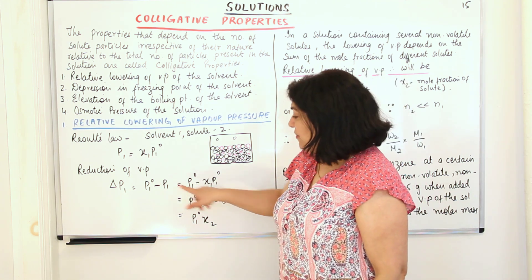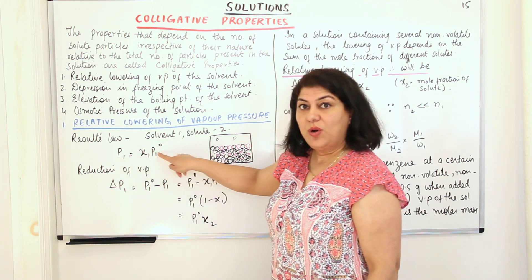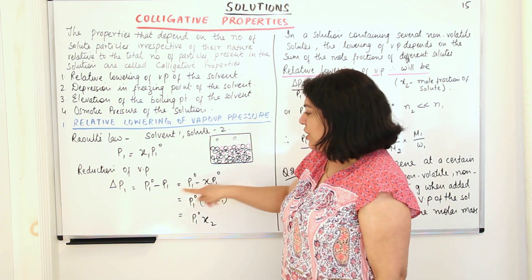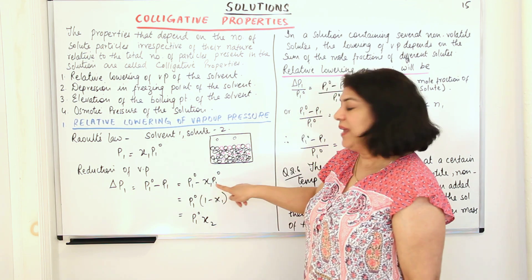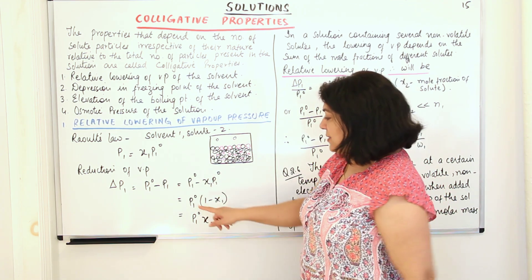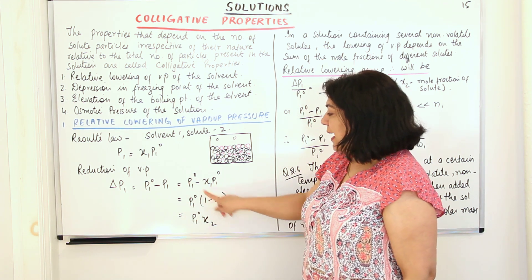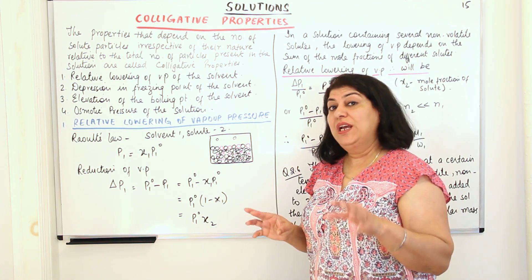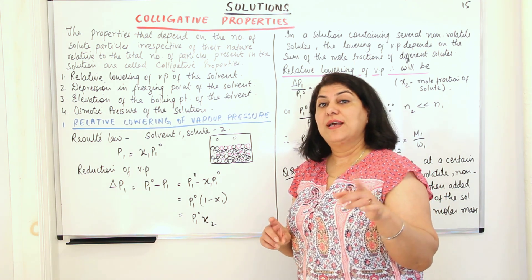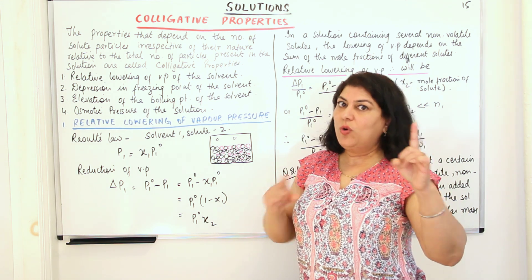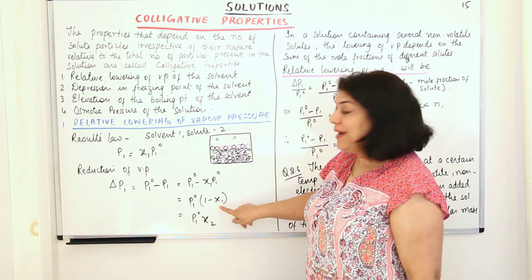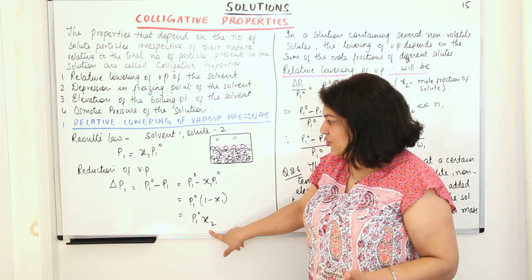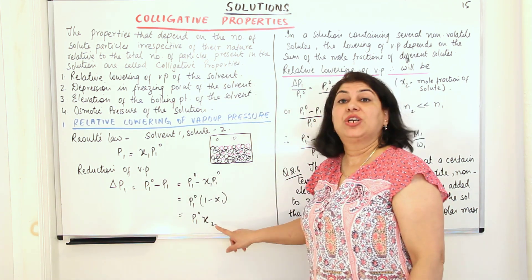This can be written as P1⁰ minus x1·P1⁰ (substituting Raoult's law for P1). Rearranging, you get P1⁰(1 − x1). In a binary solution, 1 minus x1 automatically becomes the mole fraction of the solute, that is x2. So delta P1 equals P1⁰·x2. If you have more than one solute, since colligative properties do not depend on the nature of the solute, x2 becomes the sum of the mole fractions of all the solutes present.